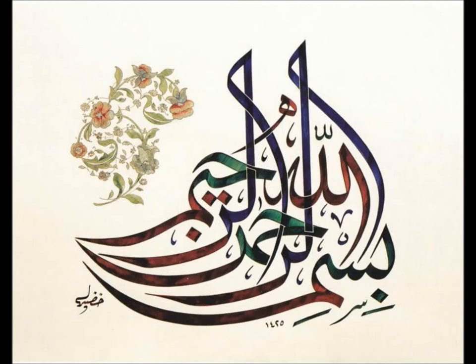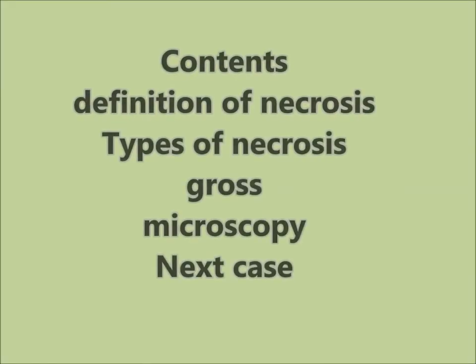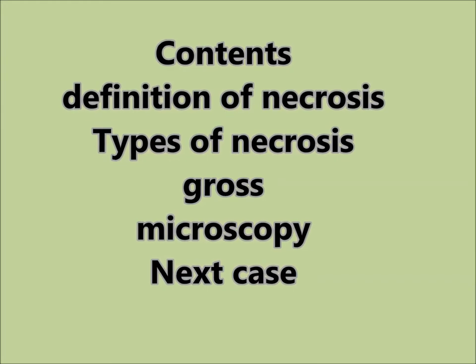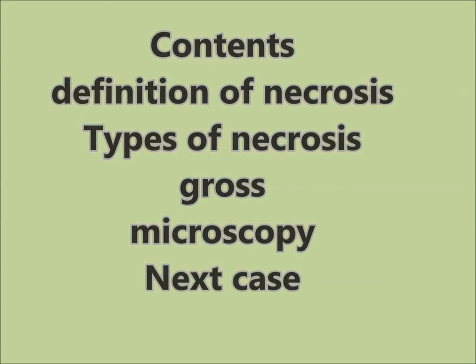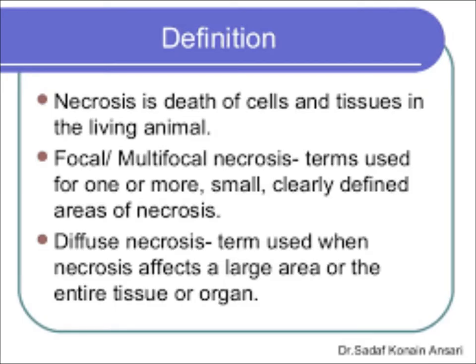Today we will discuss necrosis: the definition, types of necrosis, and gross and microscopic morphology. The definition of necrosis is the death of cells and tissue in a living organism. Terms used include focal, multifocal, or diffuse necrosis, when necrosis affects a large area or entire tissue or organ.